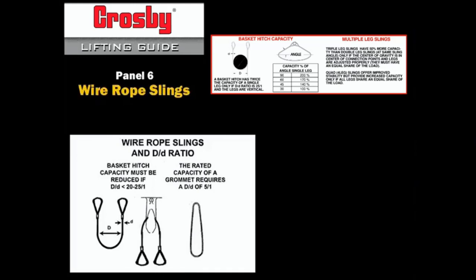Per ASME B30.9, if the wire rope sling forms a basket hitch over a load or fitting smaller than 25 times the diameter of the wire rope, the sling's basket hitch capacity must be reduced.